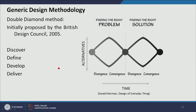Another model is the double diamond model, also associated with Donald Norman's 'Design for Everyday Things,' but first proposed by the British Design Council in 2005. The diagram looks like two diamonds. The first diamond is finding the right problem — finding the right problem solves half the solution, making it much easier to find the right solution. This is what we should understand from ethnographic survey or user study; once we find the right problem, we move to the next phase: finding the right solution.